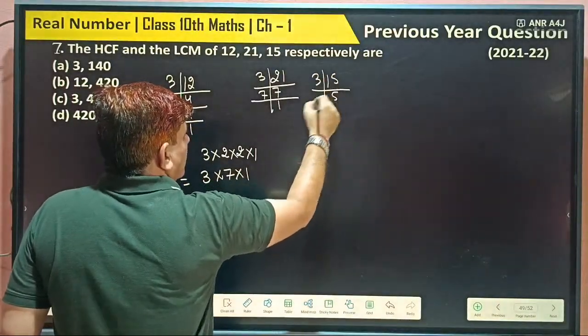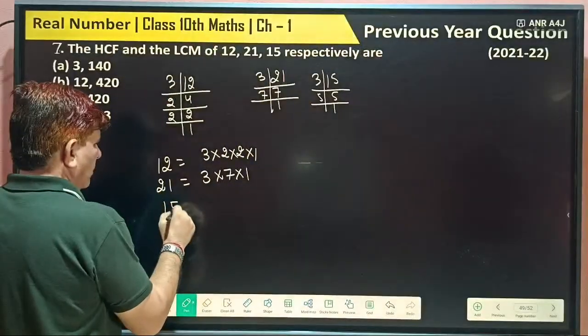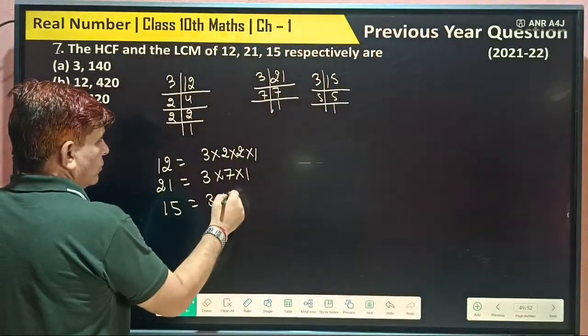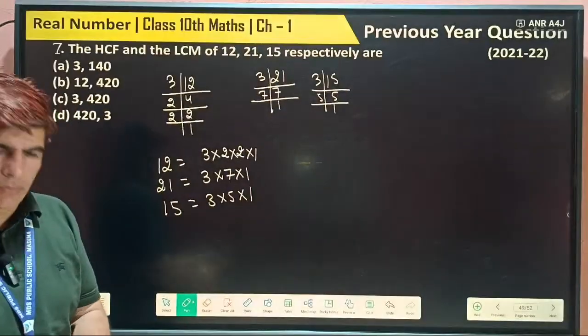3, 5's are 15, so 15 is equal to 3 into 5 into 1. Understood?